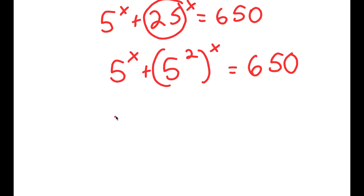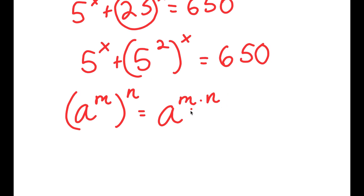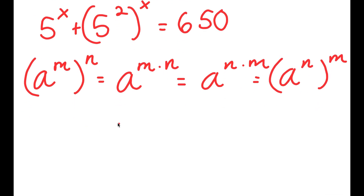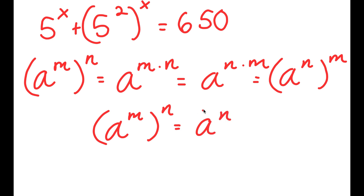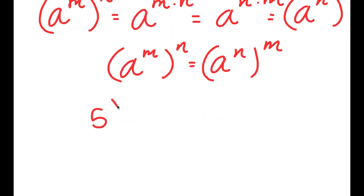If I have something in the form a to the power of m to the power of n, this is equal to a to the power of m times n. However, a to the power of m times n is also equal to a to the power of n times m. And if a to the power of m times n equals a to the power of m to the power of n, then a to the power of n times m should equal a to the power of n to the power of m — meaning a to the power of m to the power of n equals a to the power of n to the power of m. So using this, I can rewrite 5 to the power of 2 to the power of x as 5 to the power of x to the power of 2.